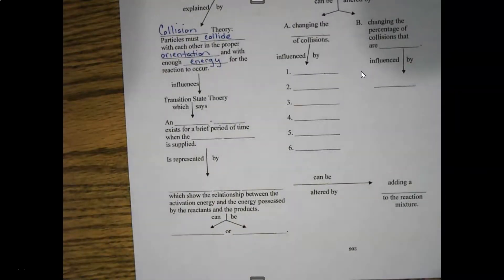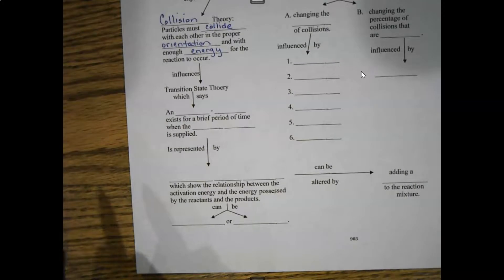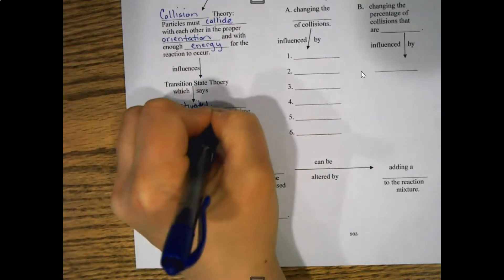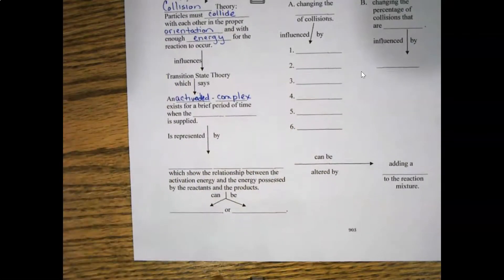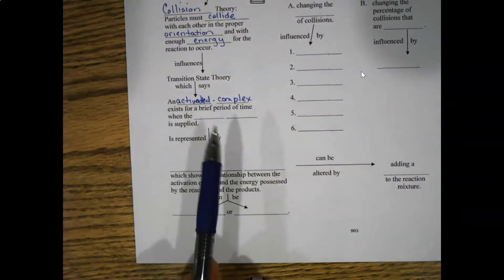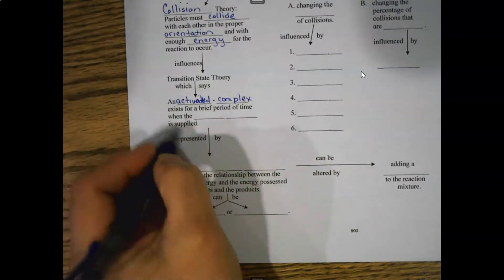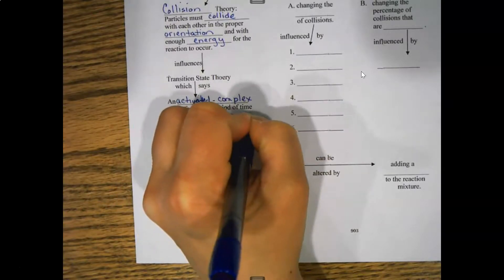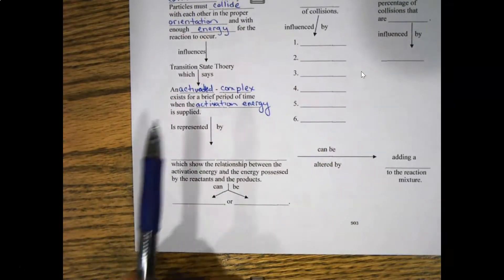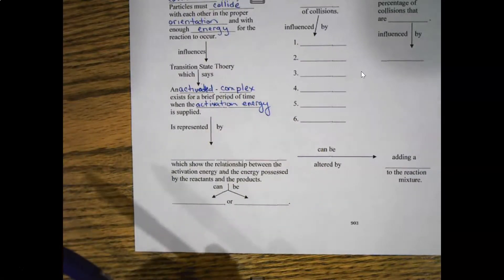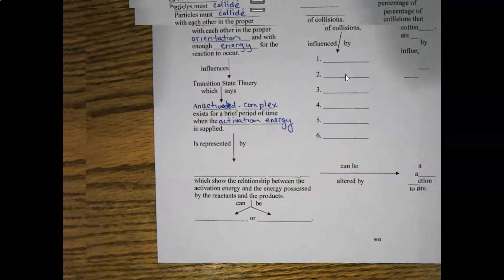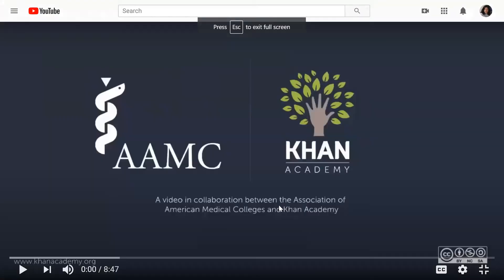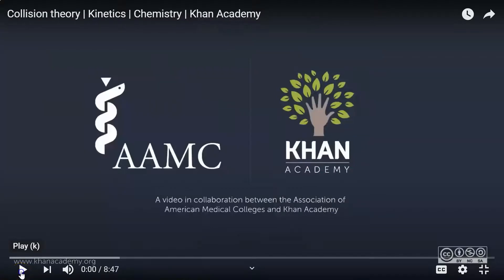That initial collision creates what's called an activated complex. The activated complex exists for a very brief period of time when you've supplied enough energy, and that energy is called the activation energy. The activation energy is the energy you need in order to get those molecules to collide. Take a look at this next video that focuses on the transition state theory.